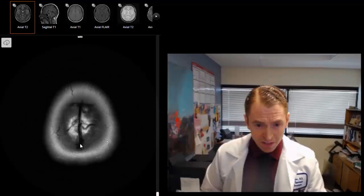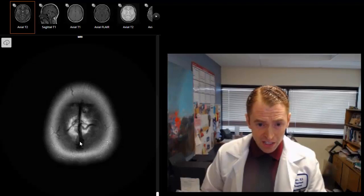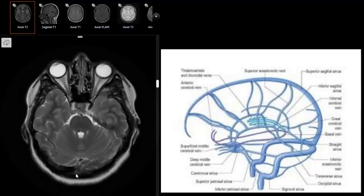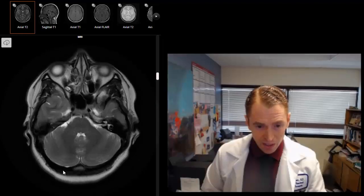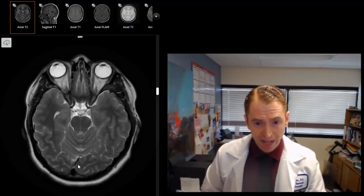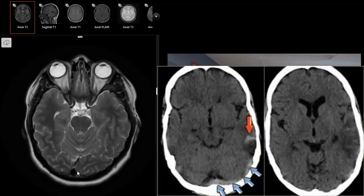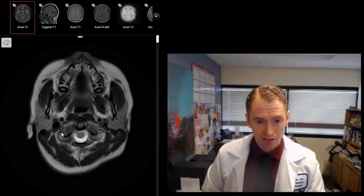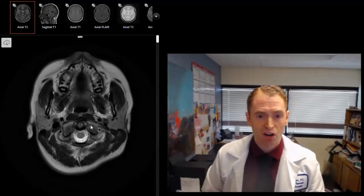It gets reabsorbed into the venous structures by structures called arachnoid granulations, which are very difficult to see on this particular MRI. Some of the major veins or dural venous sinuses are shown here. For instance, this is the superior sagittal sinus. We come back here into the confluence of sinuses. We can see the transverse sinuses. Sometimes we see clots, and they can actually cause headaches and strokes and brain hemorrhages. They ultimately dump into the jugular veins and then back into the heart.